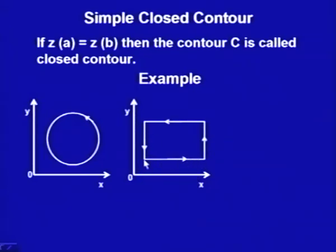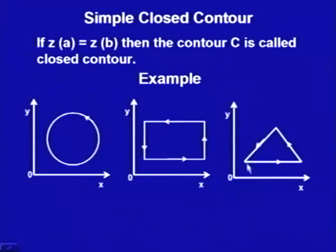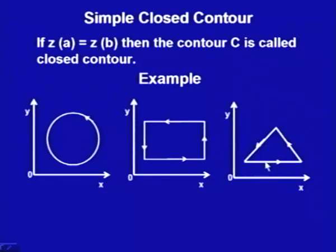If we take the orientation the other way round, that is also a contour. Similarly, a triangular shape — starting from one vertex, traversing each side in order — gives another contour. Changing the orientation or the starting point gives different contours. So contours are defined with specific orientations.